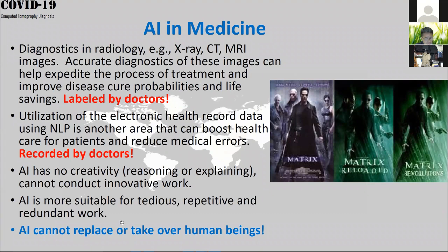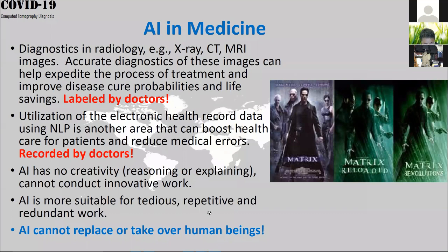AI cannot carry out truly innovative work. For example, an AI robot can combine compounds randomly at very high speed, but it cannot come up with a good reason why two things should be combined. AI is more suitable for tedious, repetitive, and redundant work. For CT images, we can reduce the amount of work to perhaps 10 or 20 slices presented to the radiologist, instead of having them go through hundreds of images one by one.